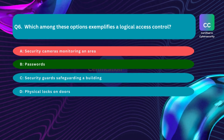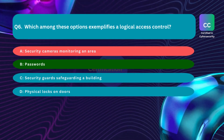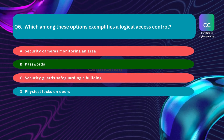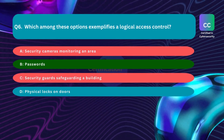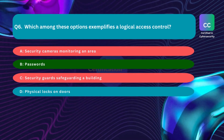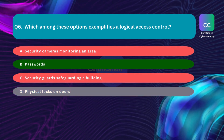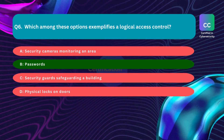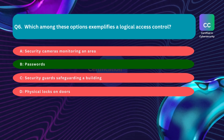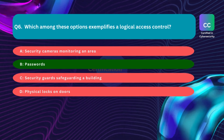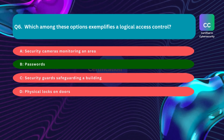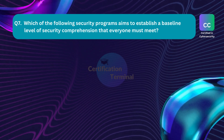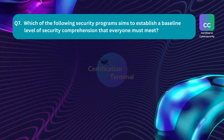Security cameras (Option A) are a surveillance measure falling under physical security and monitoring, not logical access controls. Security guards (Option C) are another example of physical security measures. Physical locks on doors (Option D) are an example of physical access controls involving tangible barriers to restrict access.